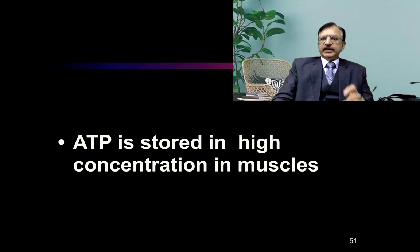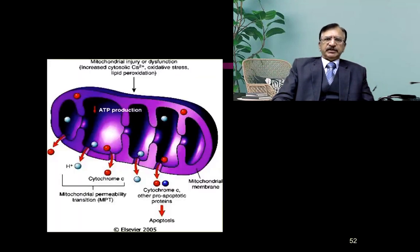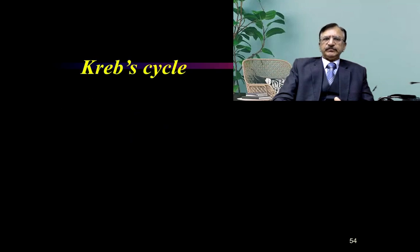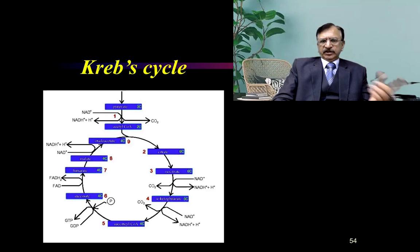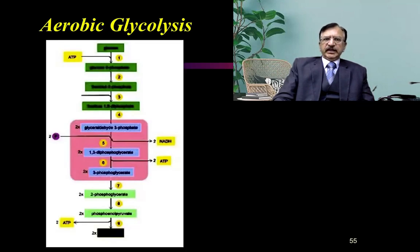ATP is stored in high concentration in the muscles. There is a balanced production of ATP from glycogen stores, with certain chemical processes breaking down glycogen to maintain ATP production — including the Krebs acid cycle and aerobic glycolysis, that is the breakdown of glycogen aerobically — all going on in the mitochondria. During life, due to the availability of ATP in the muscle, the muscle can contract and relax.